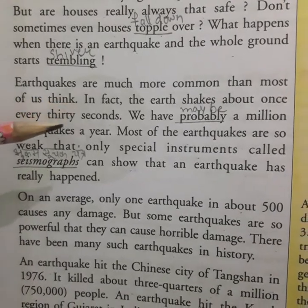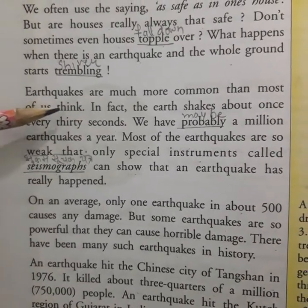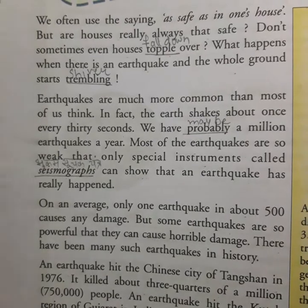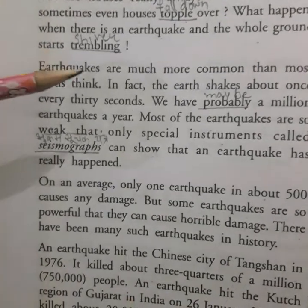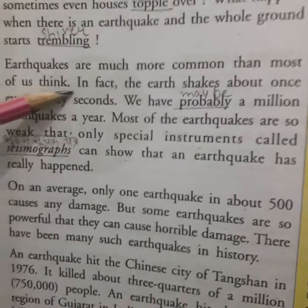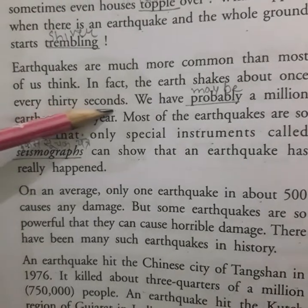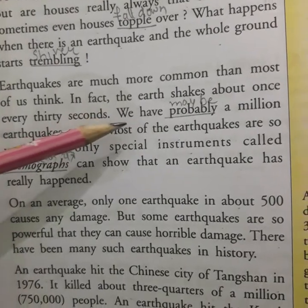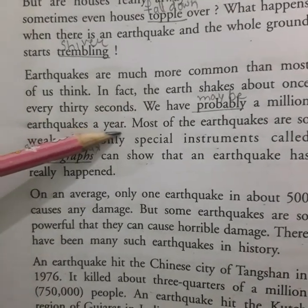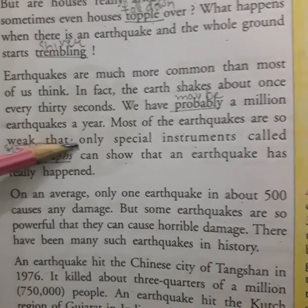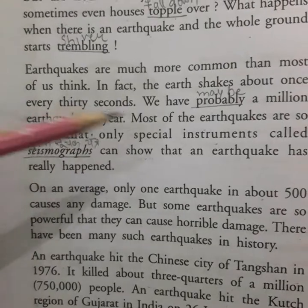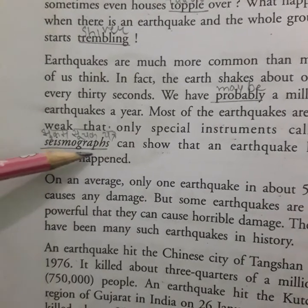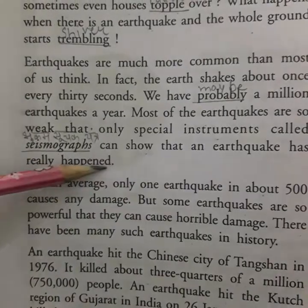Earthquakes are much more common than most of us think. In fact, the earth shakes about once every 30 seconds. We probably have about a million earthquakes a year. Most earthquakes are so weak that only special instruments called seismographs can detect that an earthquake has really happened.